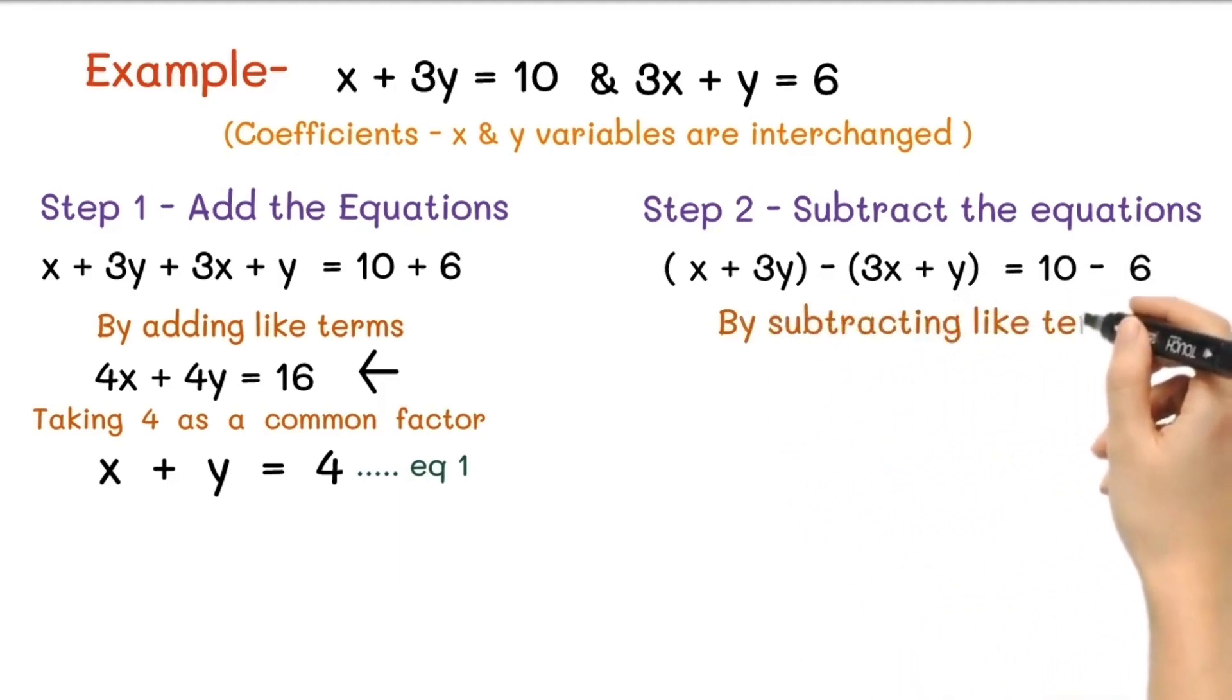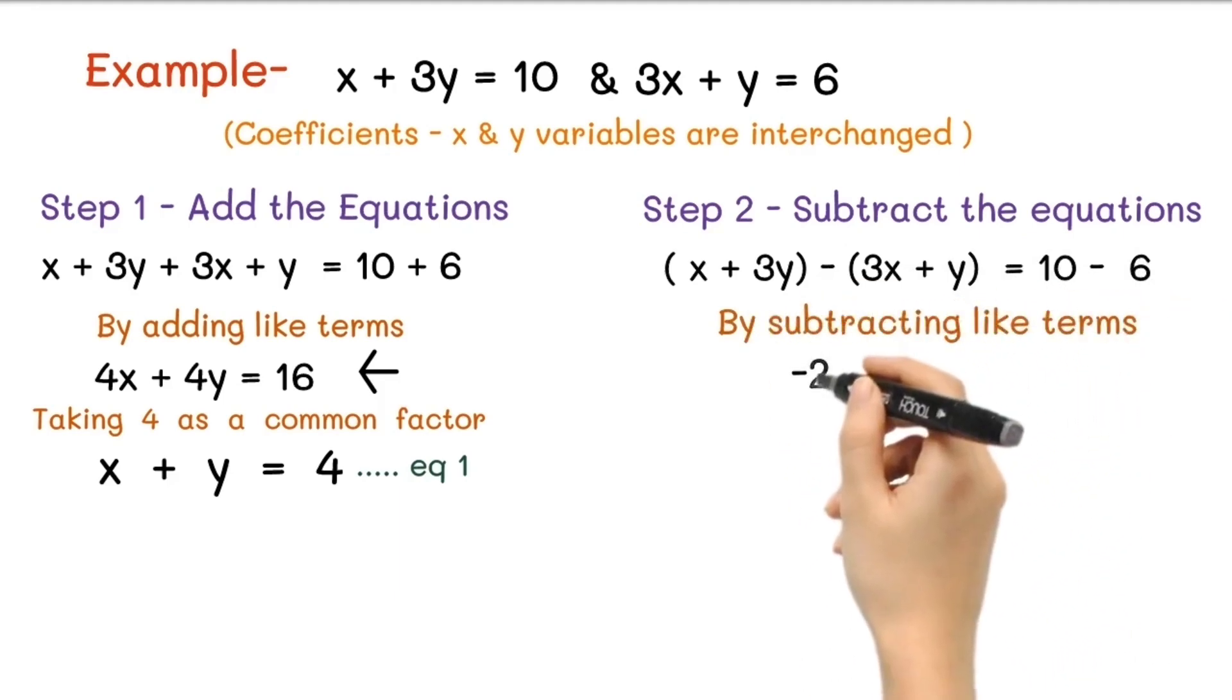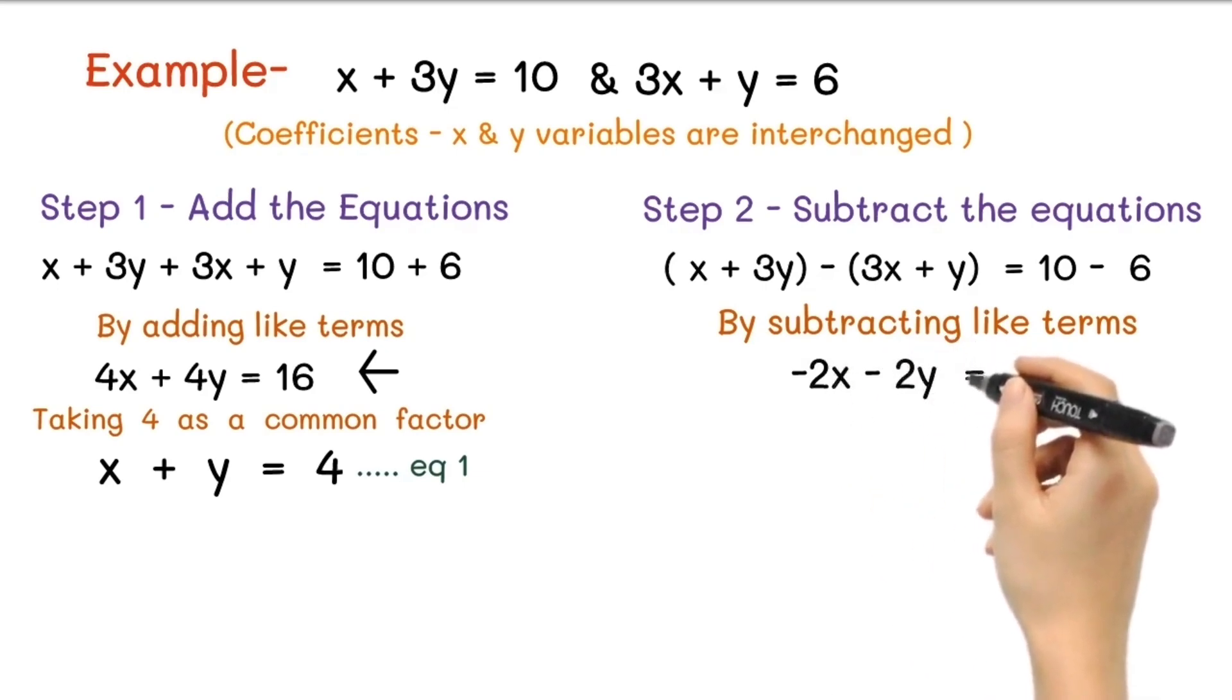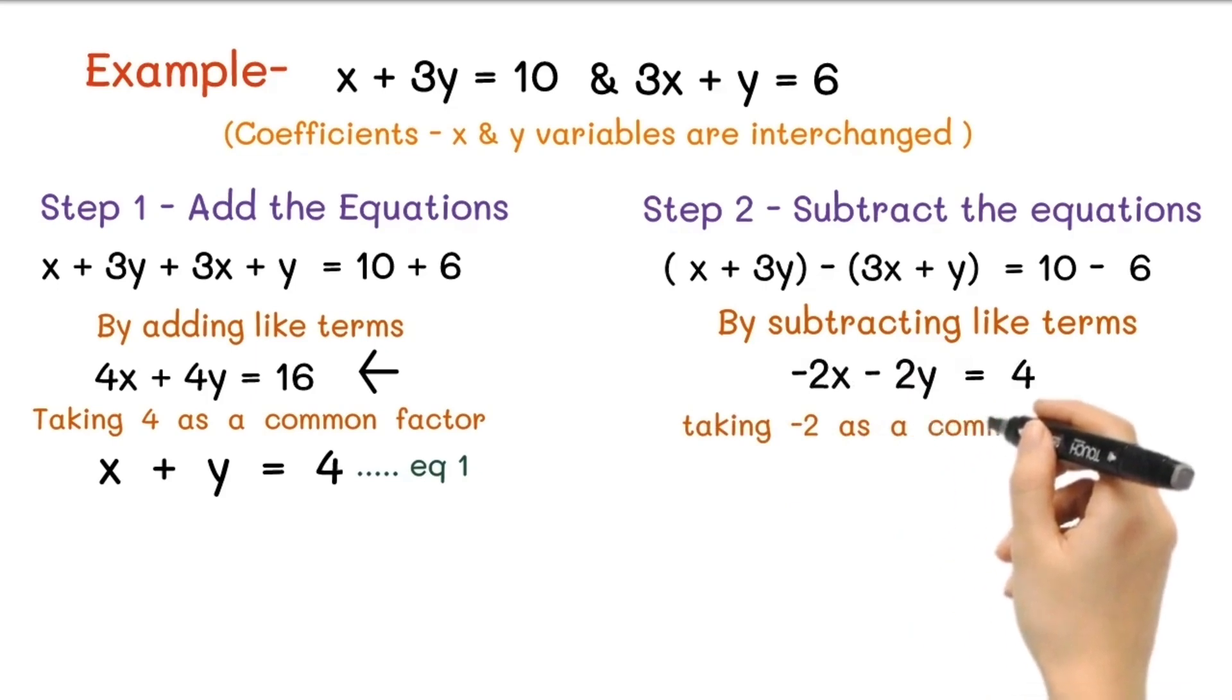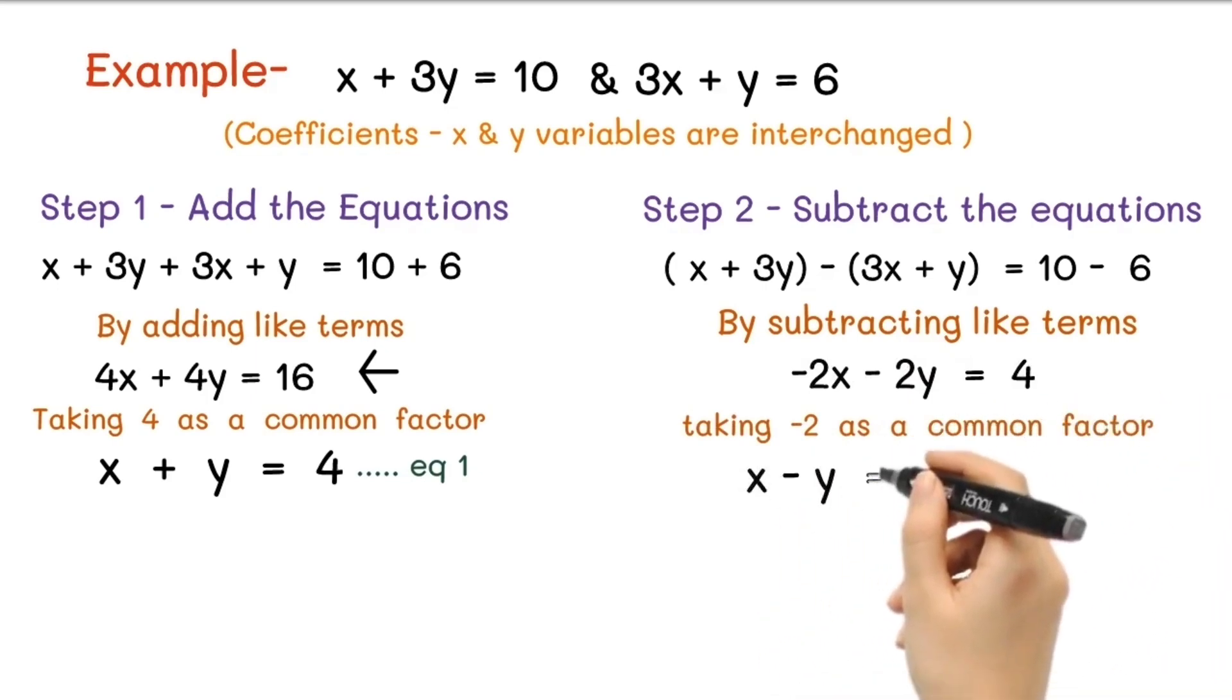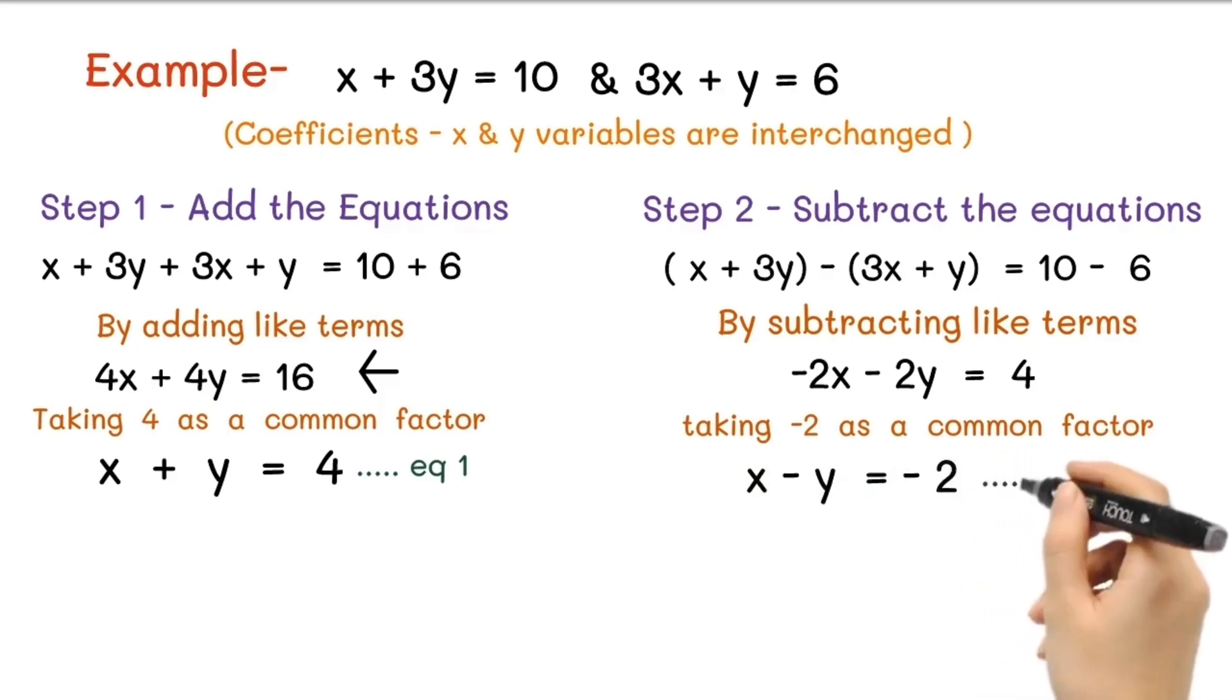By subtracting like terms, we will get -2x - 2y = 4. Now take -2 as a common factor from both sides, so we get x - y = -2, equation 2.